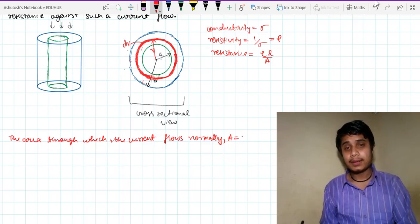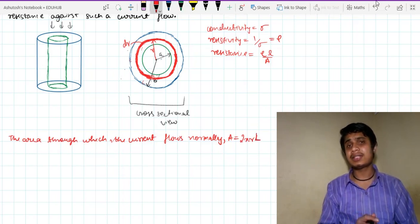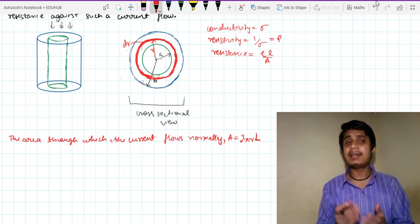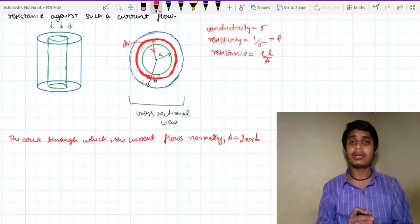So it will be 2 pi r into length. What is the lateral surface area of a cylinder? It is 2 pi r into its length, lateral surface or the curved surface area, whatever you say is 2 pi r into L.